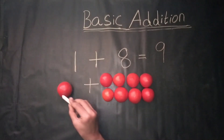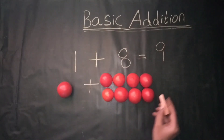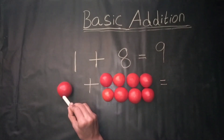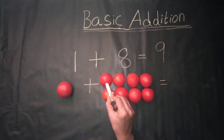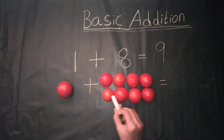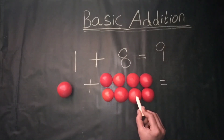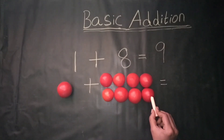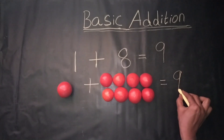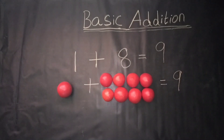1 plus 9 — count together: 1, 2, 3, 4, 5, 6, 7, 8, 9. We get the answer: 9.